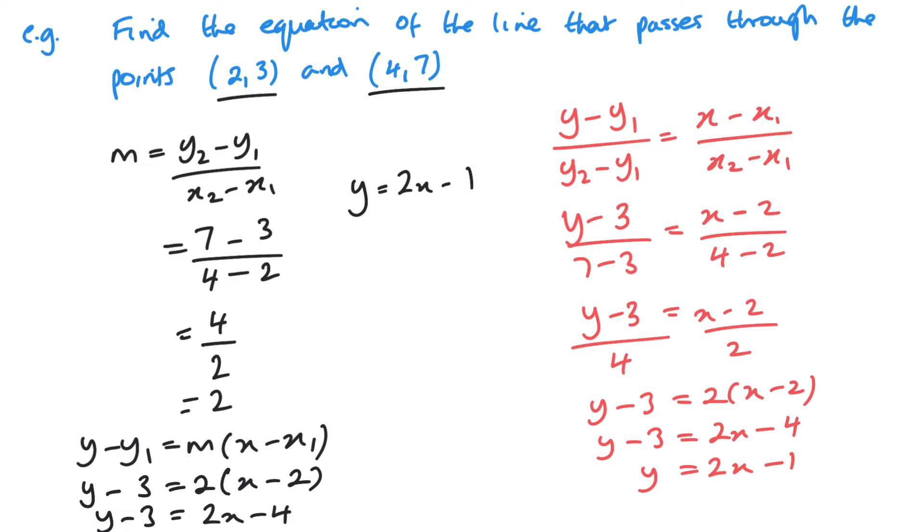And you can see I'm back to a very similar place as I was with the last method. Now what this particular method does, it just combines the gradient within this formula and rearranged. But personally I don't like to use it. I prefer to find the gradient and then y minus y1 equals mx minus x1. That would be my preferred method.